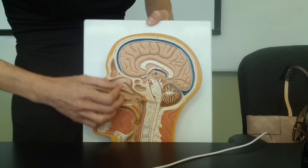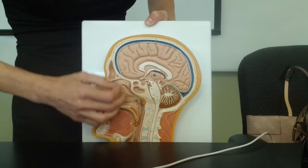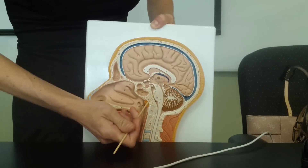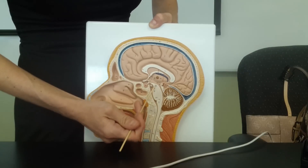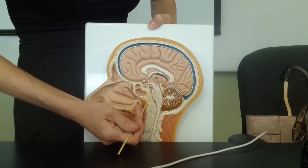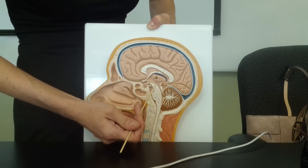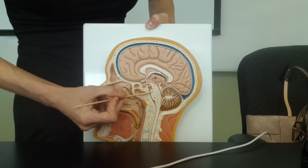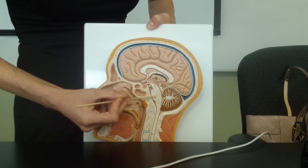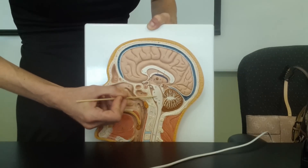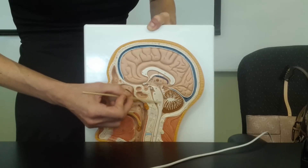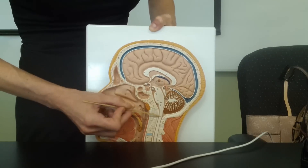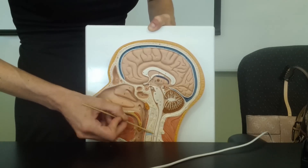Looking down at the brain stem, the top part of the brain stem is the midbrain. Underneath the midbrain, this bulge is the pons, and the bottom of the brain stem is the medulla oblongata, which connects to the spinal cord.